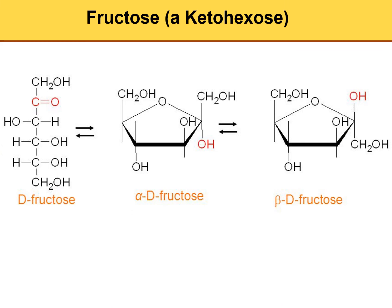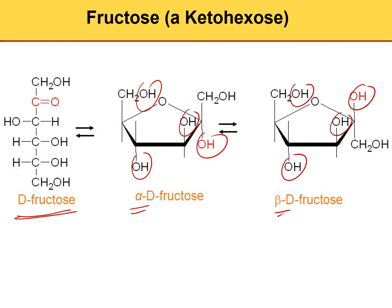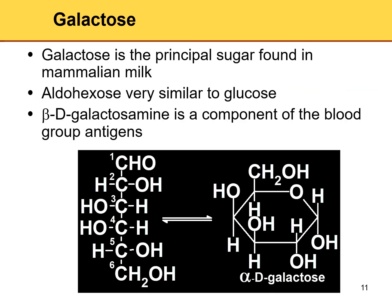Again, alpha is OH down, beta is OH up. For the D form, OH is on the right-hand side, then one up and crisscross, just like glucose. The configuration pattern must be followed correctly.